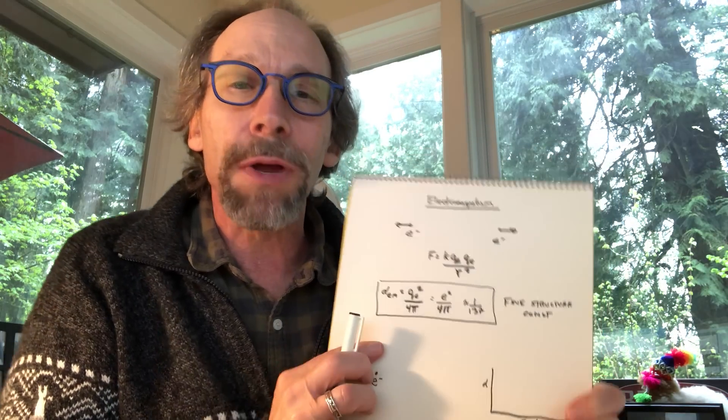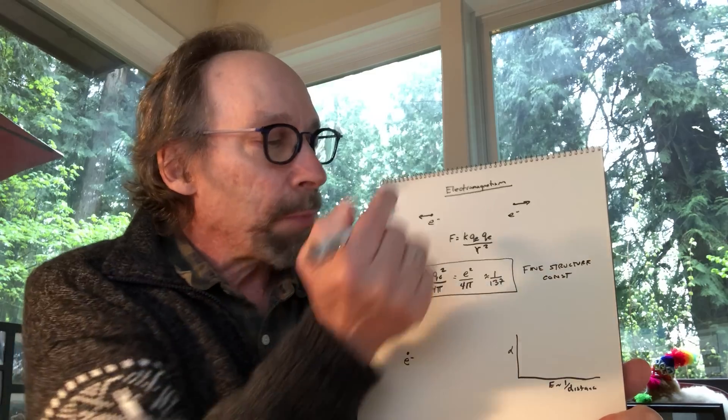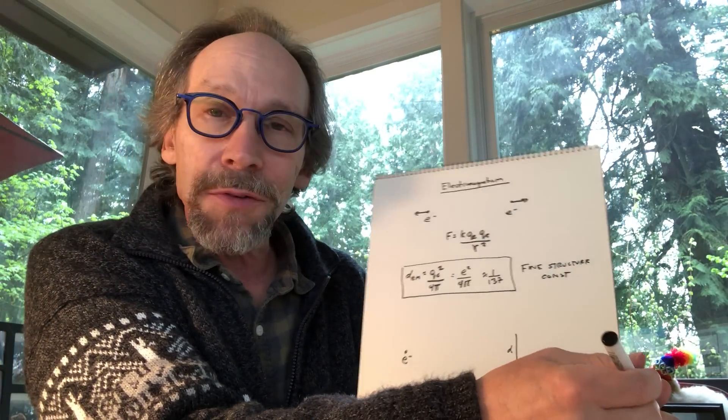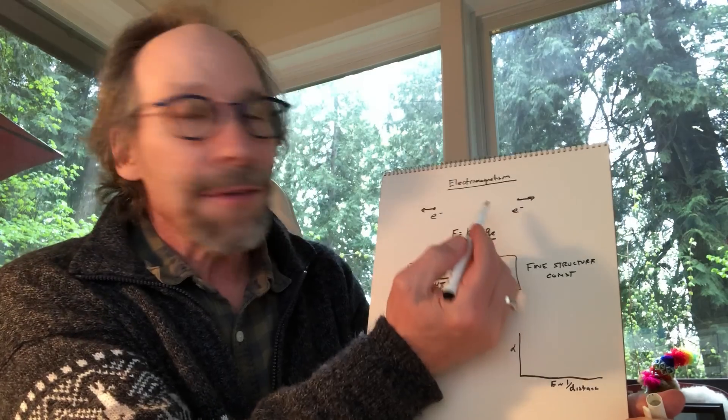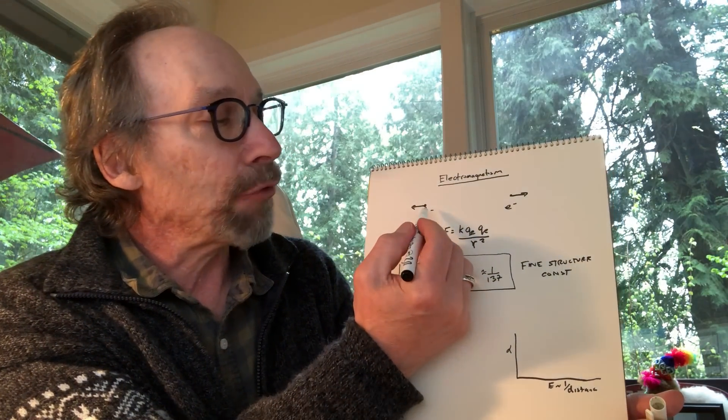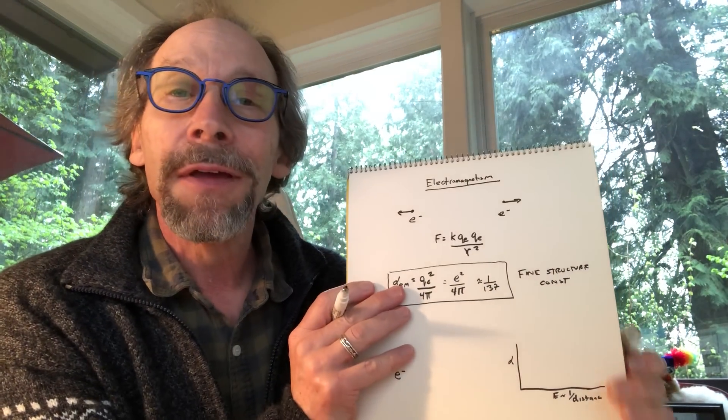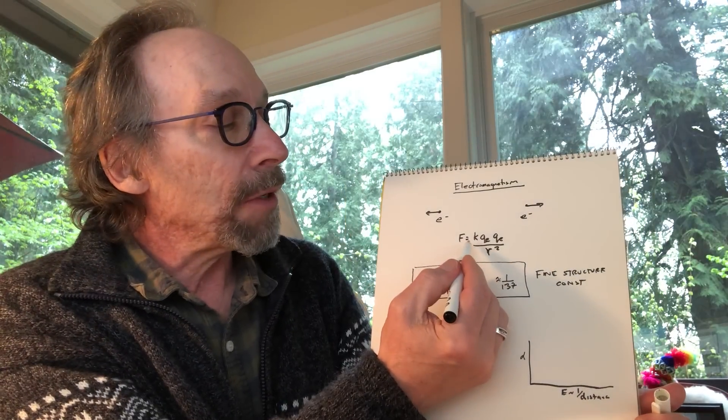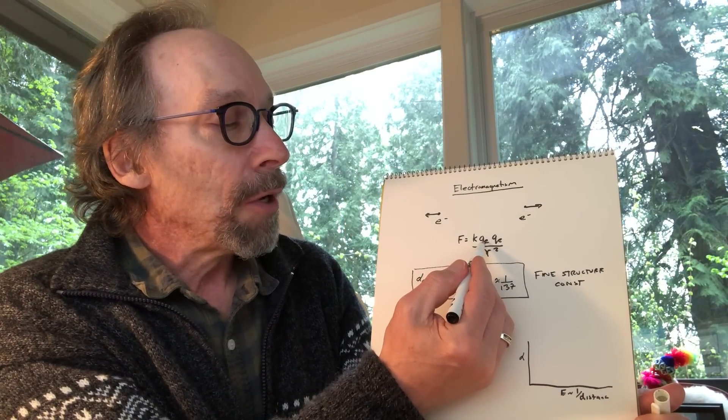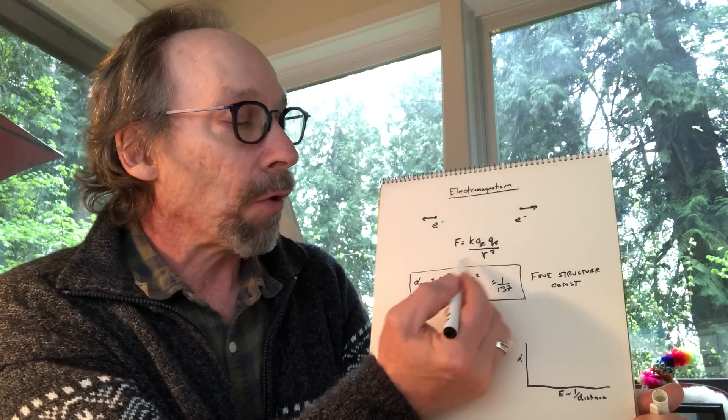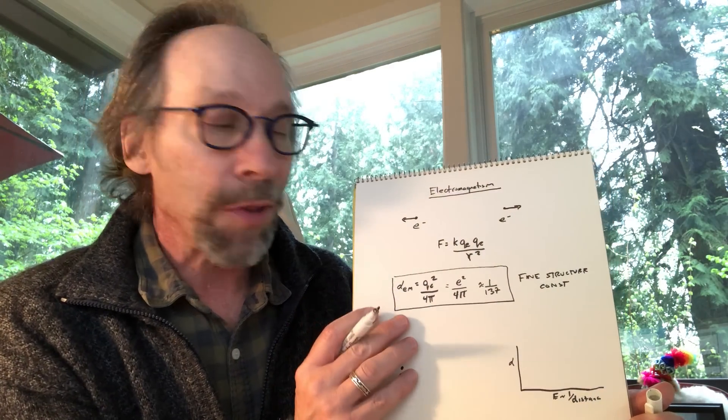It's pretty straightforward, I hope. I've written some things down so I wouldn't have to write so much while talking. So this is electromagnetism, and the electromagnetic force between two electrons is a force of repulsion. The form of it is some constant times the charge on one electron times the charge on another electron over R squared. Many of you remember this from high school.